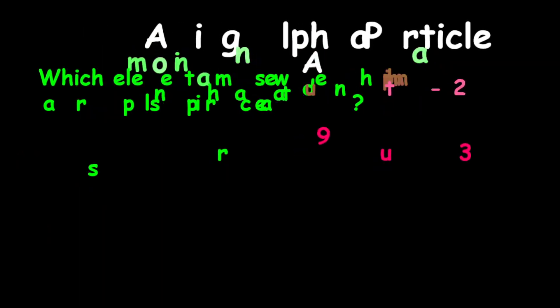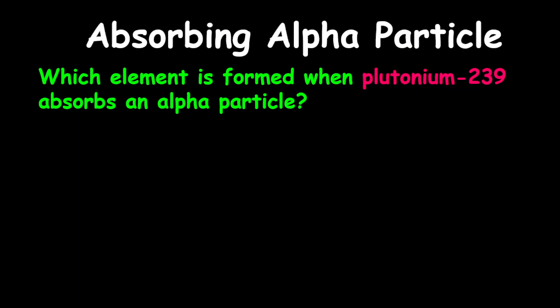For a final example, we're looking at an example for the absorption of alpha particles. The question reads: which element is formed when plutonium-239 absorbs an alpha particle?